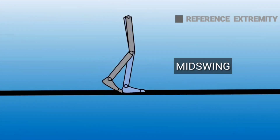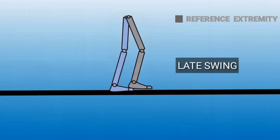Mid swing refers to the instant where our reference extremity comes beneath the body — it is the time period at the end of the early swing phase and the beginning of the late swing phase. This mid swing phase occurs between 75 to 85 percent of the gait cycle.